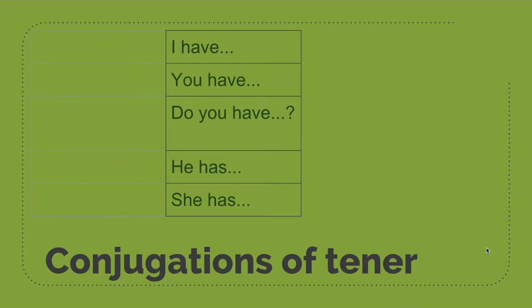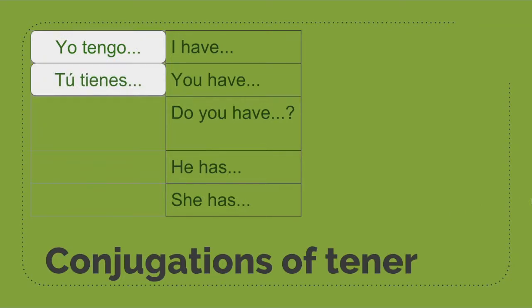So we said that I have in Spanish is yo tengo. And you have in Spanish is tú tienes. Let's look at some sentences constructed with tú tienes.